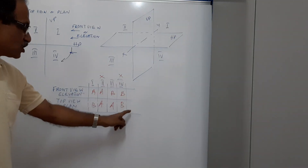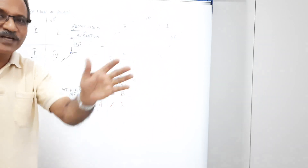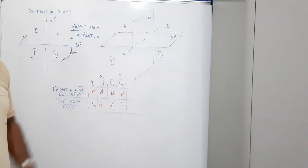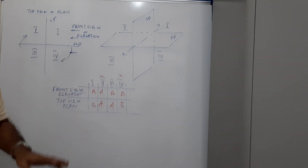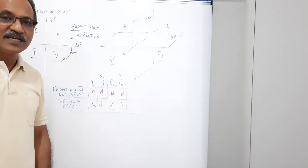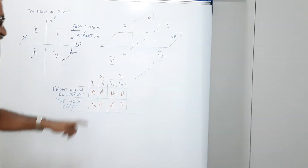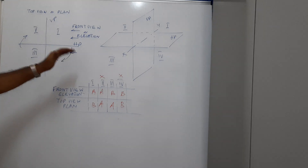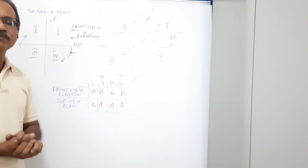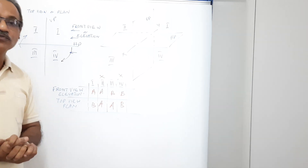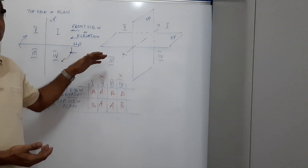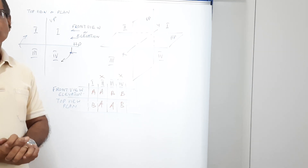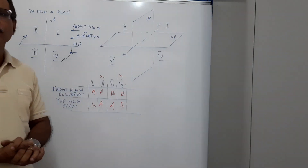It is extremely necessary that this table becomes a photographic memory for you. It is very simple — just like you once found it difficult to say A to Z but now do it effortlessly, this too will become second nature within two days. This is orthographic projection, and in the next video we will move on to the projection of points and lines. I will explain in English, Malayalam, and most probably Hindi as well when doing problems. Thank you, see you in the next class.